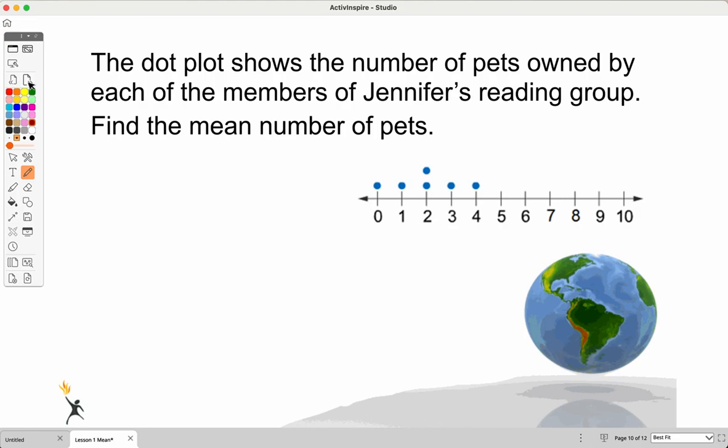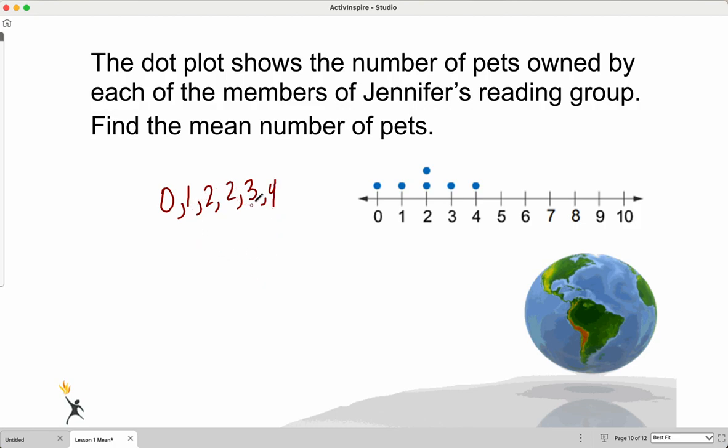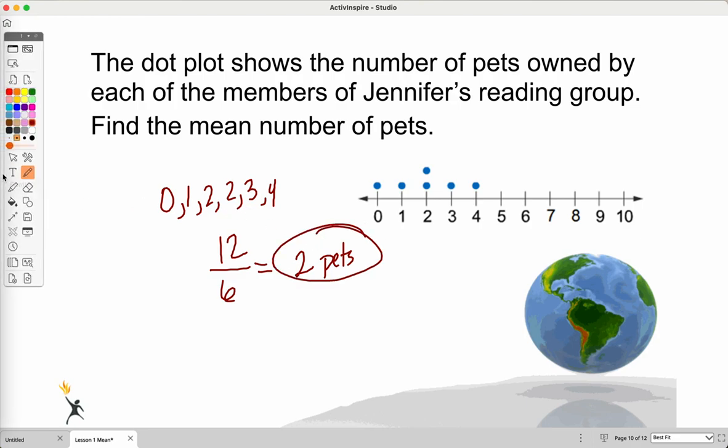Okay. Go ahead and figure this one out. For the average number of pets owned by Jennifer's reading group. All right. So this one had a little trick in it. We have a zero. We still have to count zero as one of our numbers. Zero, one, two, two, three, and four. So adding all those together, I get 12 again. But this time, I have six members. So the average number of pets is two pets in this group. Okay. Some of you might have more or less.